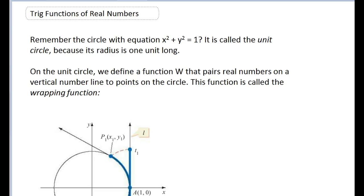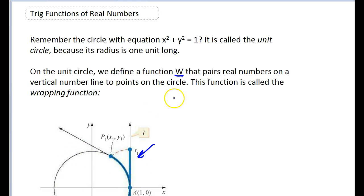Let's learn about trig functions of real numbers. The circle with the equation x squared plus y squared equals 1 is called the unit circle because its radius is 1 unit long. On the unit circle, we're going to define a function w that pairs real numbers on a vertical number line to points on the circle.